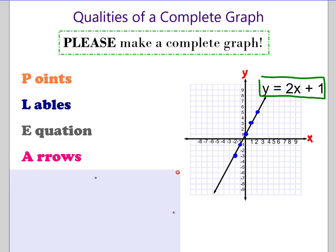And then arrows. So see at the end of my line right here, I have two arrows. That's just showing that the line is going to keep going and that it's not stopping at the end there. That line would continue on and on if I had a bigger graph.